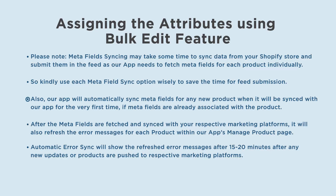Our app will automatically sync meta fields for any new product when it is synced with our app for the very first time, if meta fields are already associated with the product. After the meta fields are fetched and synced with your respective marketing platforms, it will also refresh the error messages for each product within our app's Manage Product page. Automatic error sync will show refreshed error messages after 15 to 20 minutes after any new updates or products are pushed to respective marketing platforms.